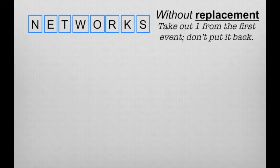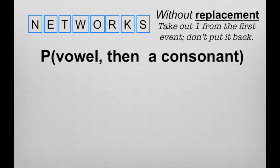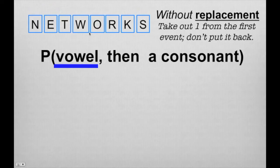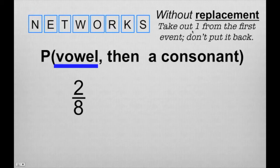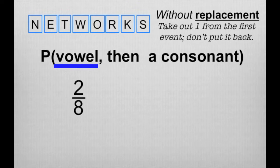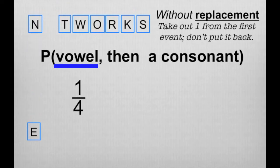Here we have the word NETWORKS. We're trying to find the probability of drawing a vowel for the first event and then a consonant for the second event. How many vowels are there? E and O — that's two out of eight tiles, so two-eighths, which reduces to one-fourth. It's important to remember: we only take out one vowel from the first event, not two. The one you pick is irrelevant — we can take out the letter E or O. So let's take out the letter E, and we don't put that vowel back.